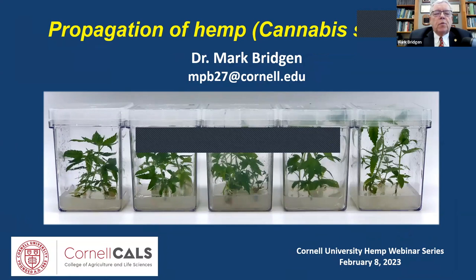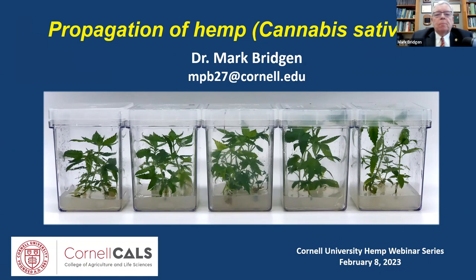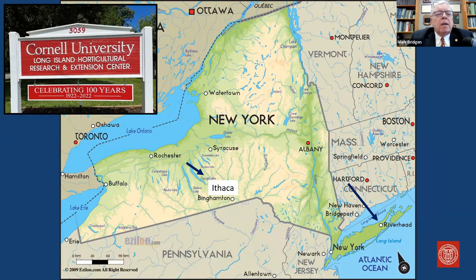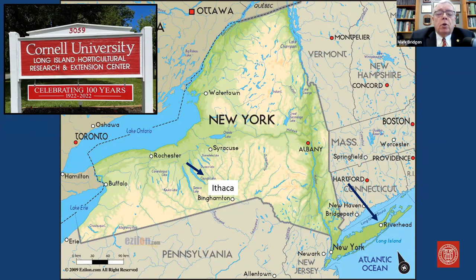Good afternoon, everybody. Thank you for joining us to talk about the propagation of hemp. At Cornell's Long Island Station — one of Cornell's off-campus remote locations — we are 300 miles away in Riverhead, New York, in Suffolk County. We just last year celebrated our 100th anniversary here on Long Island. We are here to help the agricultural community. Eastern Long Island is actually the number one county in the state of New York for crop agriculture.